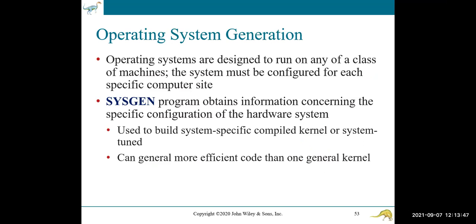Operating systems are designed to run on any class of machine. The system must be configured for each computer site — a system program obtains information concerning that configuration. This is an operating system design utility called sysgen.